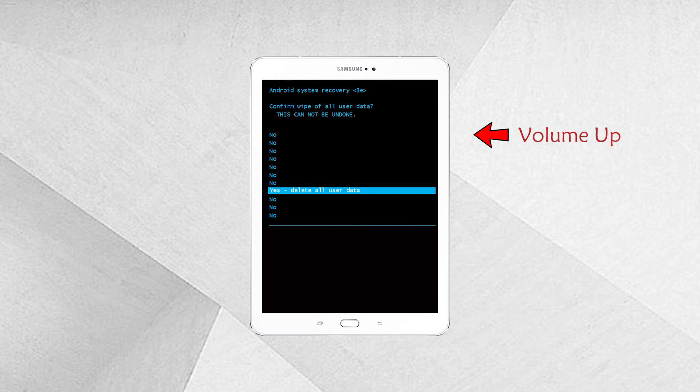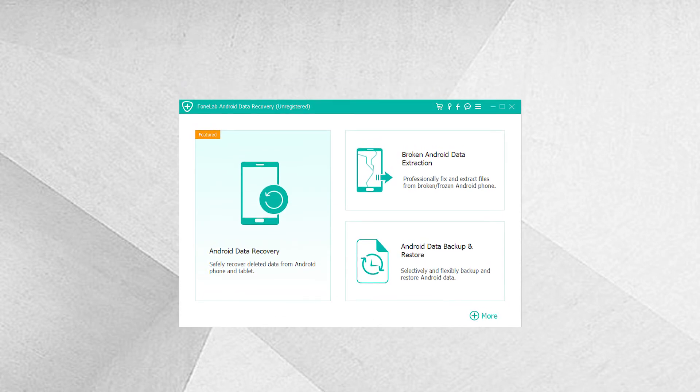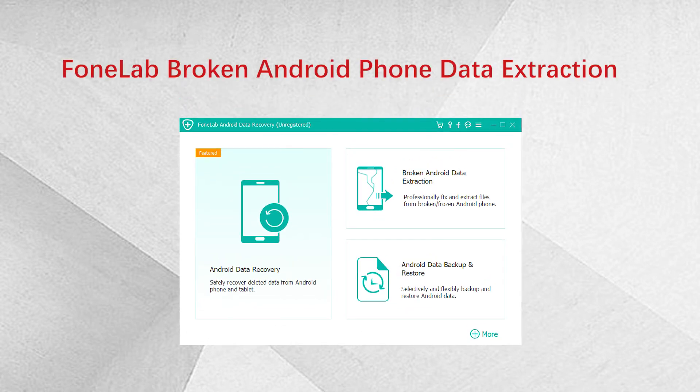You can also solve the issue manually, though it may be a bit difficult for most users. A recommended solution is an Android system troubleshooting tool called Phone Lab — Broken Android Phone Data Extraction. Here is how to use it to solve Samsung Galaxy tablet black screen problems.